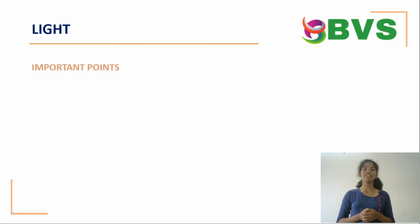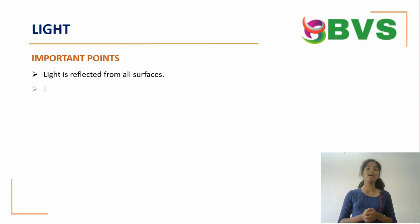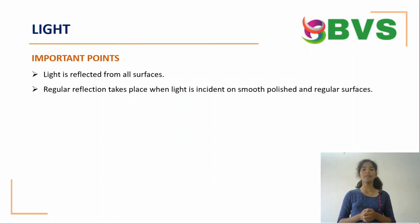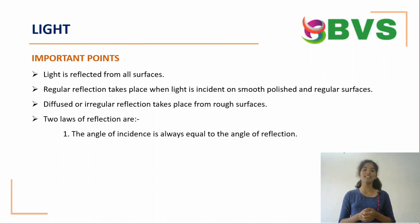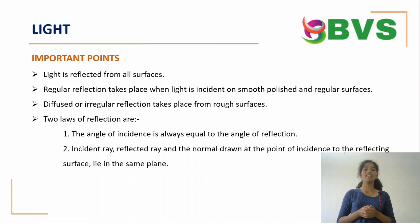Important points from this topic. Light is reflected from all surfaces. Regular reflection takes place when light is incident on smooth, polished, and regular surfaces. Diffused or irregular reflection takes place from rough surfaces. Two laws of reflection are: The angle of incidence is always equal to the angle of reflection. Incident ray, reflected ray, and the normal drawn at the point of incidence to the reflection surface lie in the same plane.